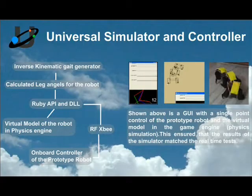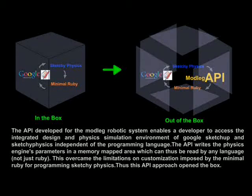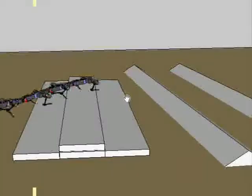A universal simulator with a unique API was developed, which gave single-point control over the virtual model in the physics engine and the real prototype of the robot.